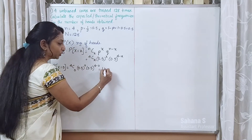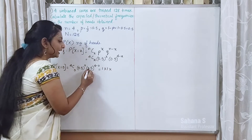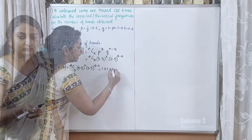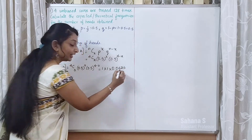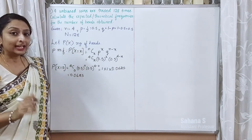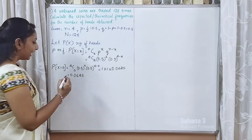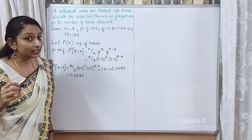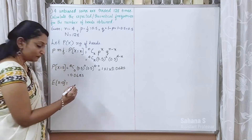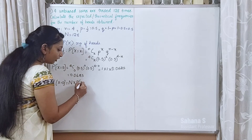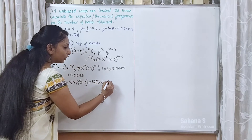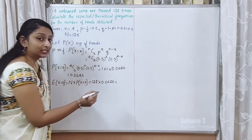For x = 0: 4C0 = 1 and 0.5^0 = 1. So 0.5^(4−0) = 0.5^4 = 0.0625. Therefore P(x=0) = 0.0625. The expected frequency of x = 0 is given by capital N × P(x=0) = 128 × 0.0625, which simplifies to 8.